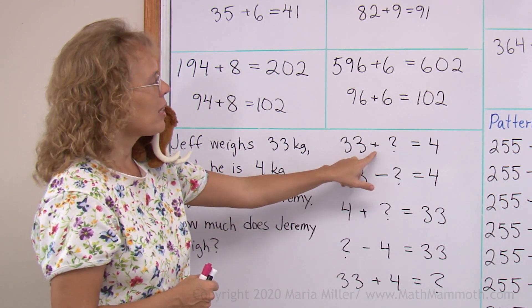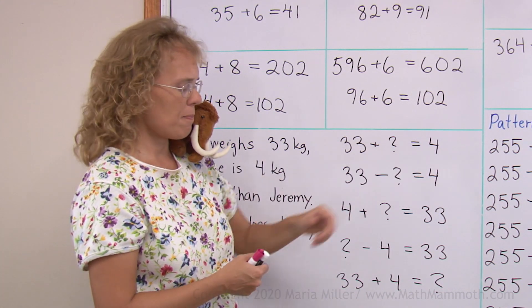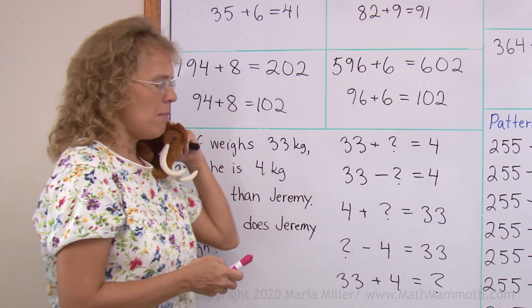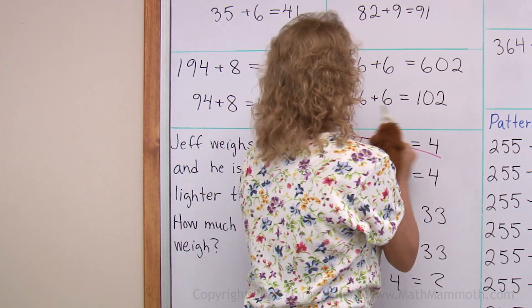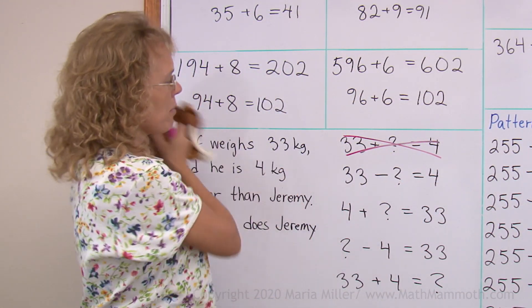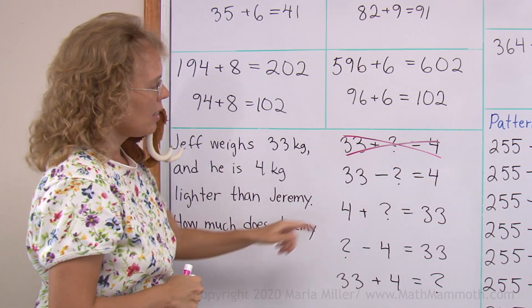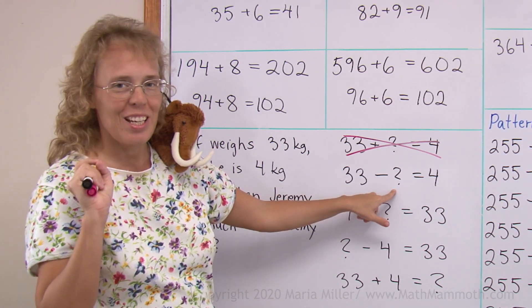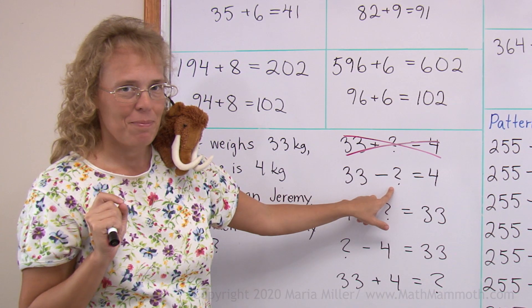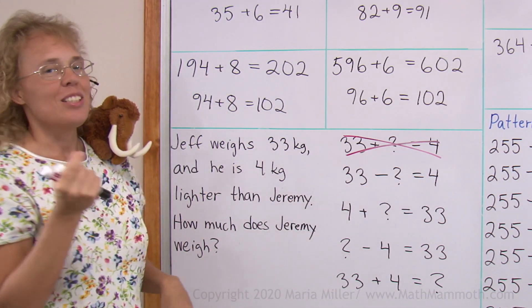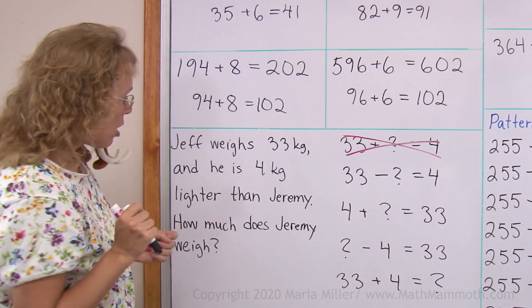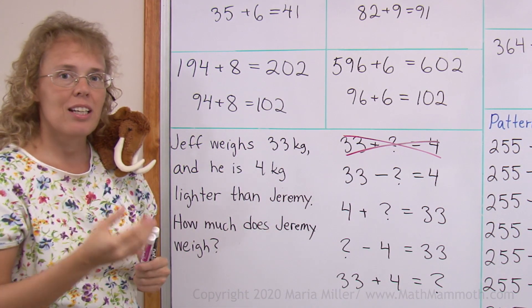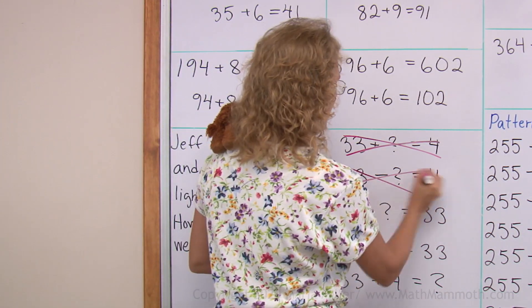Let's see. 33 plus some number equals 4. Now, if you add 33 and any number, it will be more than 33. You can't get 4 as an answer. Matthew, cross that out, okay? Can't be that. How about the next one? 33 minus something equals 4. 33 minus what number would leave us 4? This is mental math now. 29 would go here, right? 33 minus 29 equals 4. But 29 cannot be the right answer because Jeremy weighs more than Jeff, more than 33. So, 29 cannot be his weight. Cross that out too.